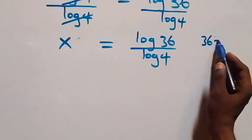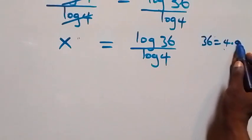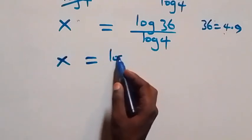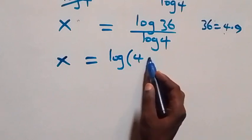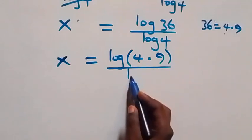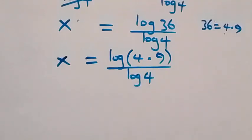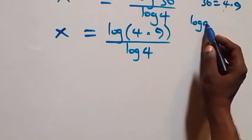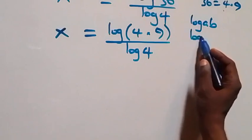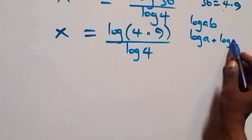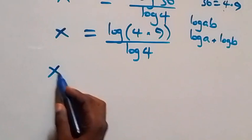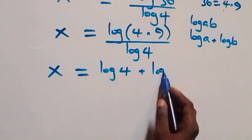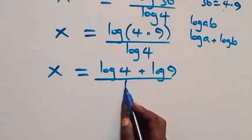From what we have here, we can express 36 as 4 times 9. So what we have becomes x equals log of 4 times 9, over log 4. This follows the log product rule: log of a times b is the same thing as log a plus log b. So this all becomes x equals log 4 plus log 9, over log 4.